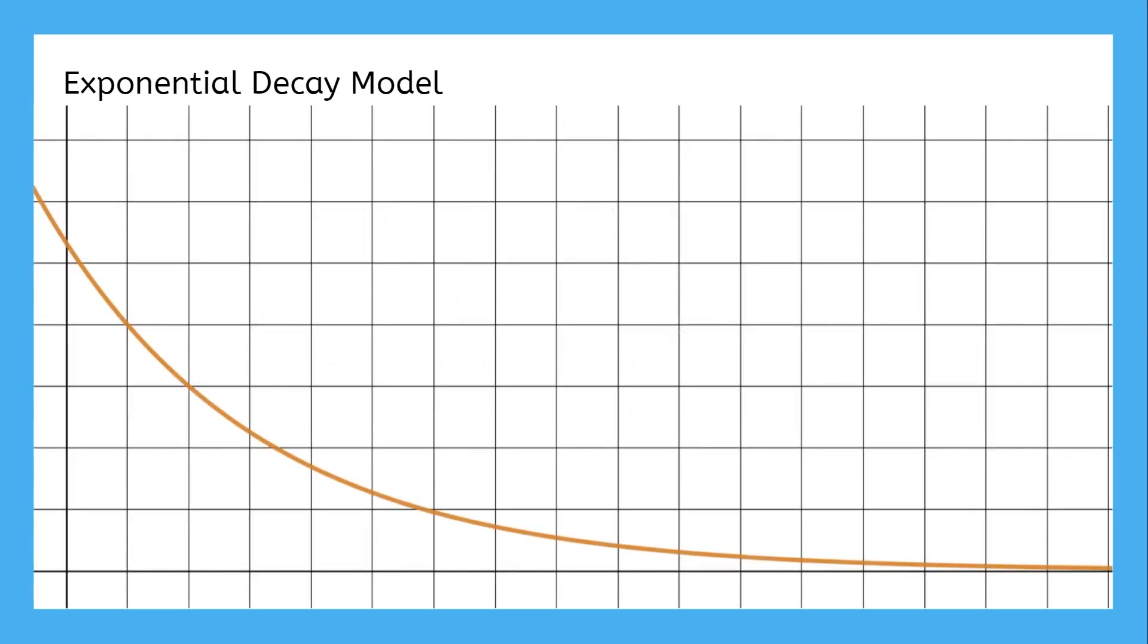So we get this model that gets more and more horizontal instead of more vertical. In a way, exponential growth and exponential decay look like opposites of each other.